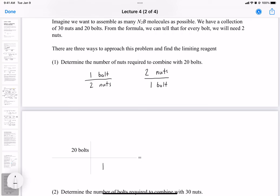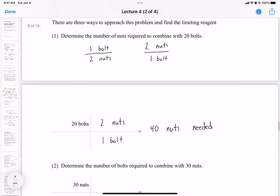So our factors here is one bolt. We want to end up with nuts. So we have one bolt per two nuts. So we will need 40 nuts here. So we will need 40 nuts. This is the amount we need. 40 nuts needed. So we need this amount to combine with 20 bolts.